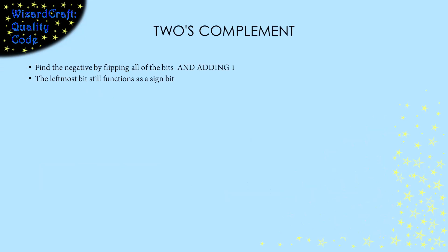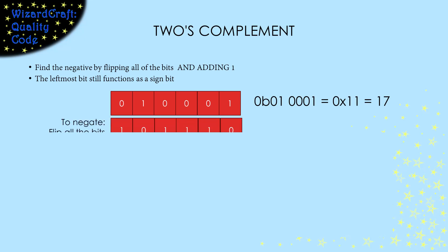The third way we can store signed integers is two's complement. With this method, the way we negate a number is to flip all the bits and then add 1. For example, this is 17. To negate it, we flip all the bits and add 1. So, this is negative 17.